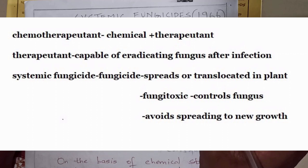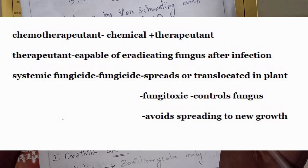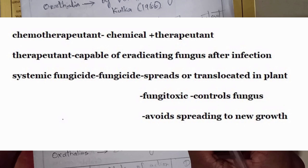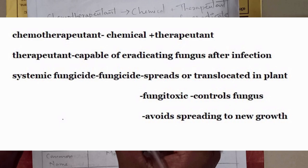Systematic fungicides are fungicides that, after application in the host plant, spread and are translocated to every part of the plant. They are fungi-toxic and control the fungus but should not affect the growth of new shoots or the plant.